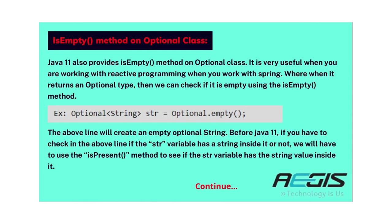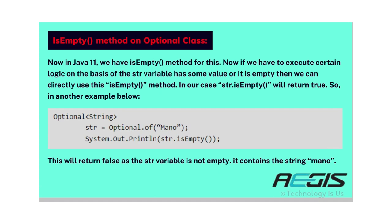The next feature is the isEmpty() method on the Optional class. Java 11 provides the isEmpty() method on Optional, which is very useful when working with reactive programming or Spring, where methods return an Optional type. Before Java 11, to check if a str variable had a string inside it or not, we had to use the isPresent() method. Now in Java 11, we have the isEmpty() method. If an Optional is empty, str.isEmpty() returns true; if the Optional contains a value like 'mano', it returns false.